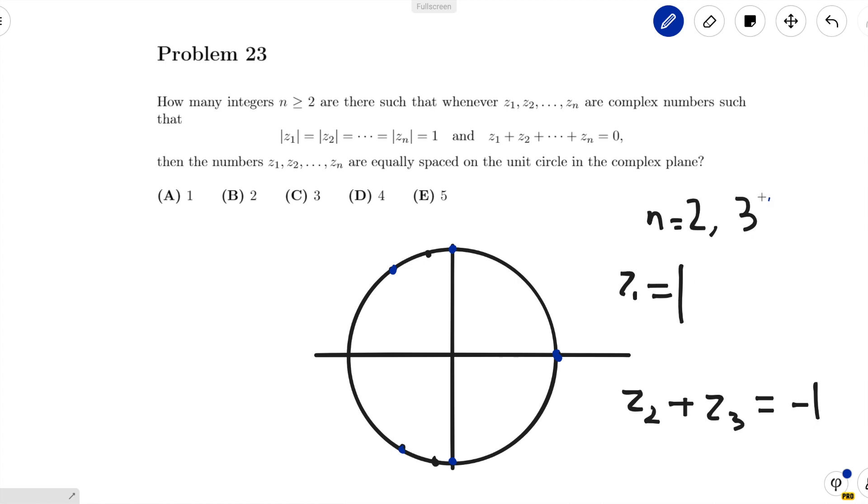So that means the only solutions are n equals 2 and n equals 3. So that means there are two solutions. Looking at our answer choices, we see that 2 is in fact one of the answers. So we circle b, and we're done.